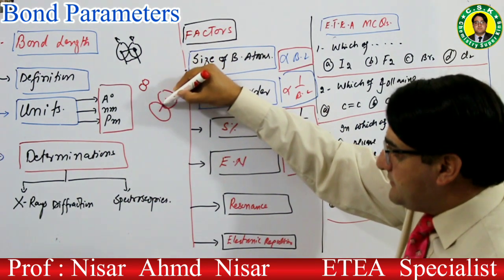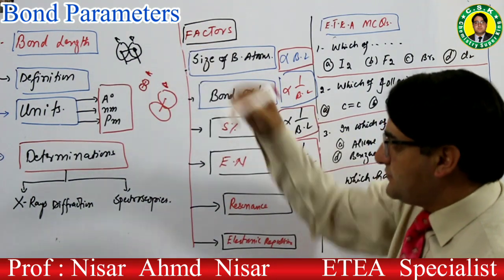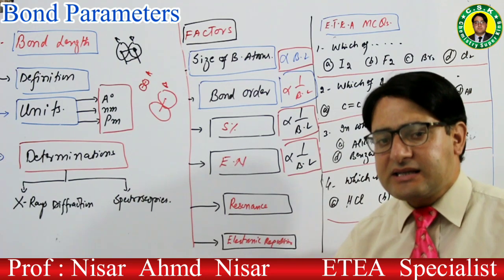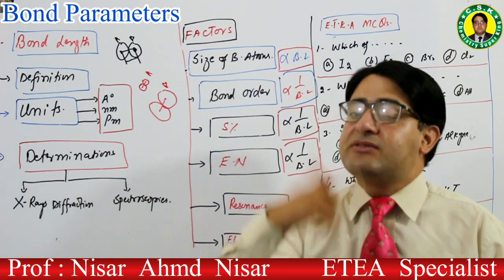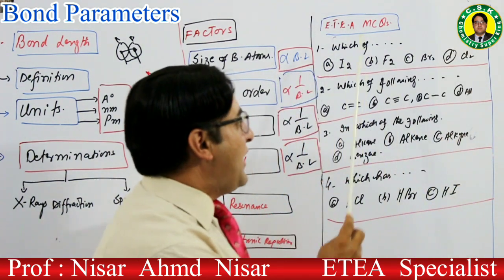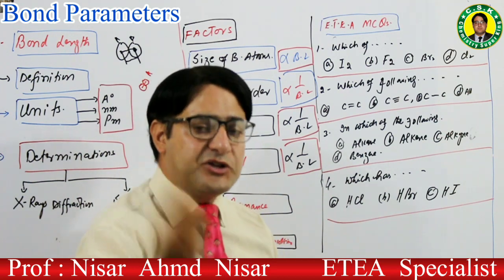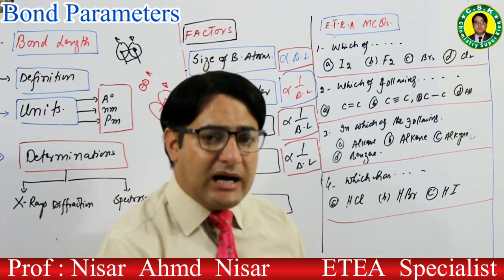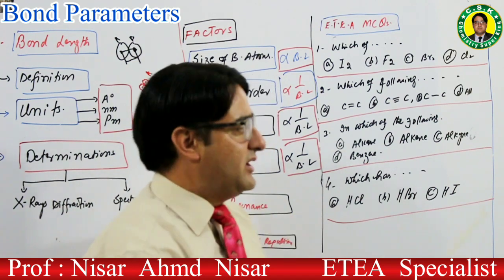دونوں cases میں nuclei کے درمیان distance آپ خود دیکھ سکتے ہیں۔ Bonded atom کا size بڑا ہوگا تو ان کے nuclei کے درمیان distance زیادہ ہوگا — جب nuclei کے درمیان distance زیادہ ہوگا اسی کو bond length کہتے ہیں۔ Bond length زیادہ ہوگی۔ اس سے ہمارا MCQ بنتا ہے: direct relation ہے — size بڑا تو bond length زیادہ، size چھوٹا تو bond length کم۔